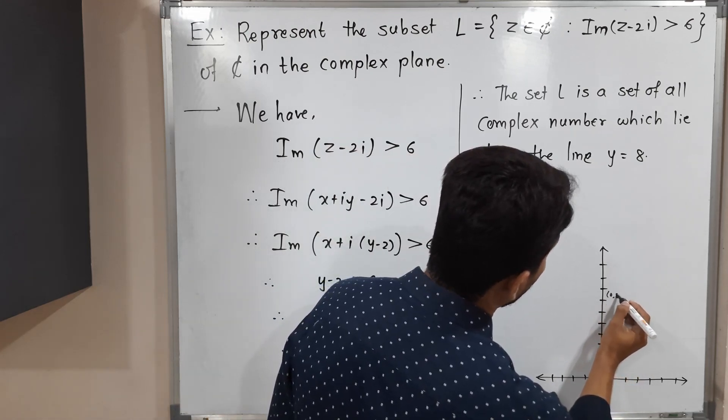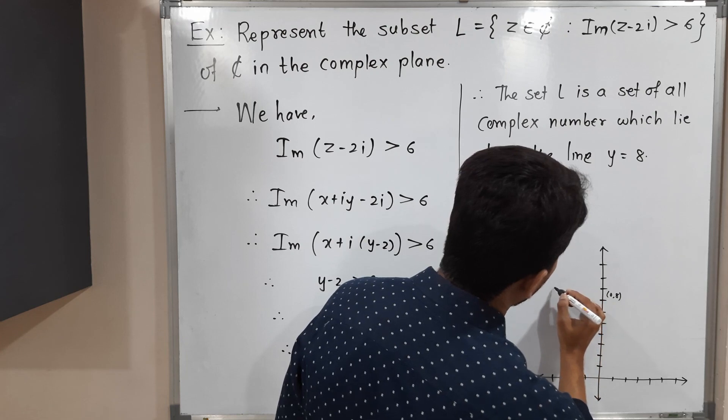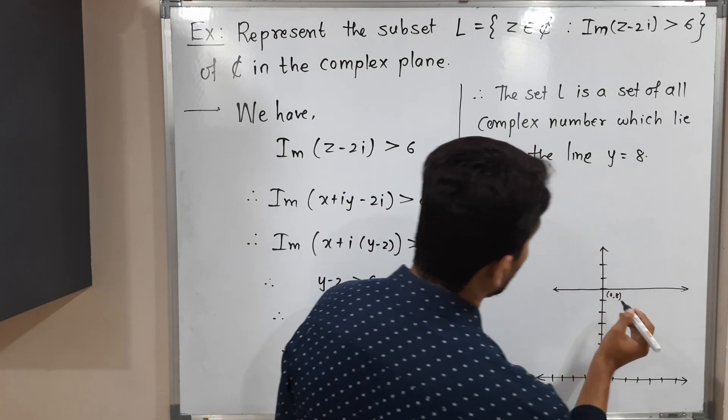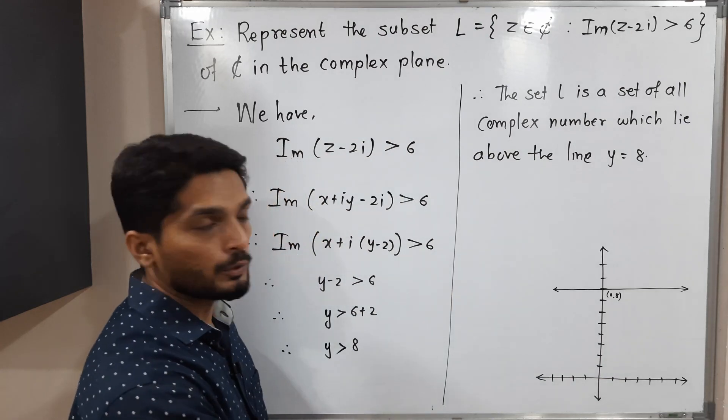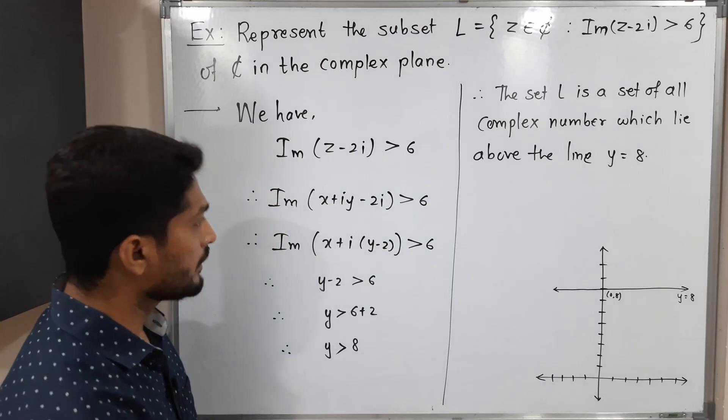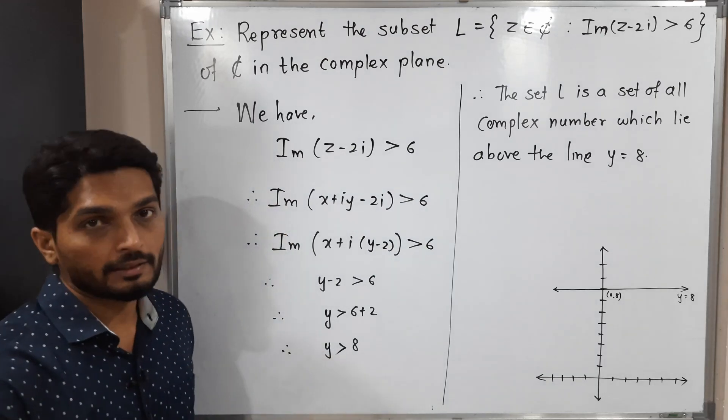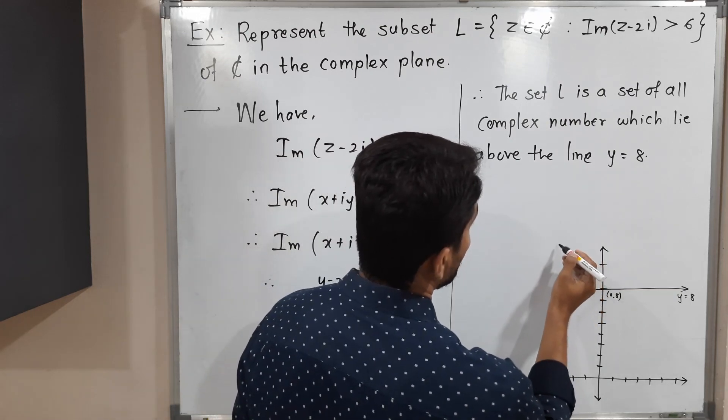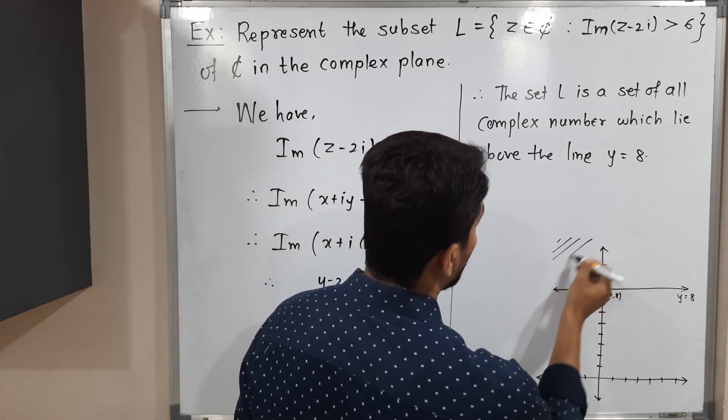So the point 0, 8 is here. We have a line here which is passing through 0 comma 8 and which is parallel to real axis. This line is y equals 8. Here y is strictly greater than 8, that means the region above this line.